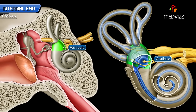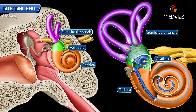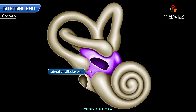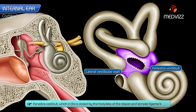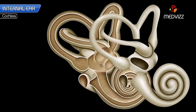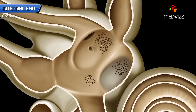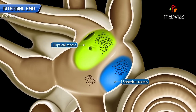The vestibule is a central ovoid cavity in the bony labyrinth and lies between the cochlea in front and the three semicircular canals behind. It is situated medial to the tympanic cavity. The lateral vestibular wall communicates with the middle ear cavity by the fenestra vestibuli, which in life is closed by the footplate of the stapes and annular ligament. The medial vestibular wall presents two recesses: a spherical recess in front and an elliptical recess behind.